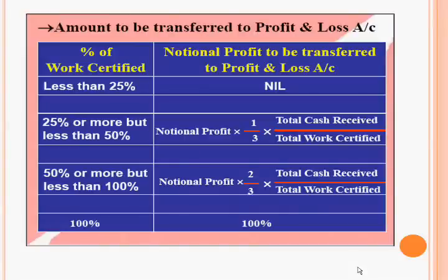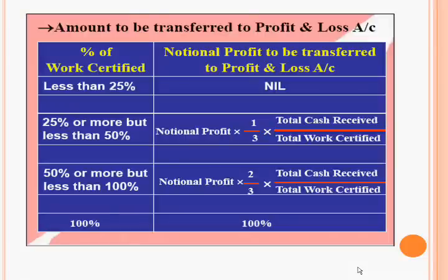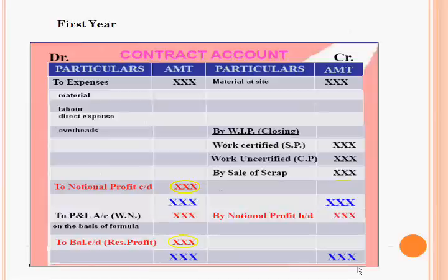If we have completed 50% of the work, then two-thirds of the notional profit — in the ratio of total cash received to total work certified — will be transferred to the profit and loss account. If we completed 100% of the work and received the work certified certificate, then 100% of the notional profit will be transferred to the profit and loss account.